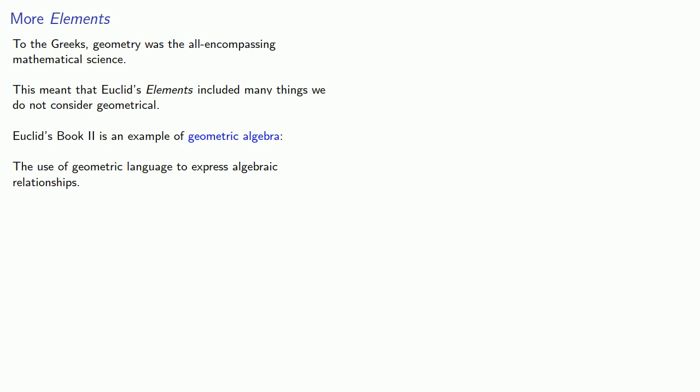To the Greeks, geometry was the all-encompassing mathematical science. This meant that Euclid's Elements included many things we do not consider geometrical. For example, Euclid's Book 2 is an example of what we call geometric algebra, the use of geometric language to express algebraic relationships.